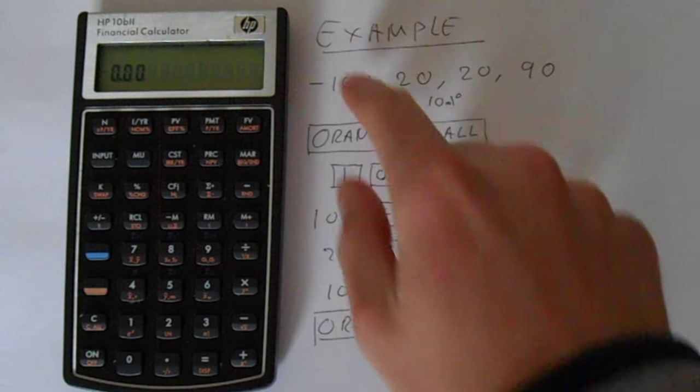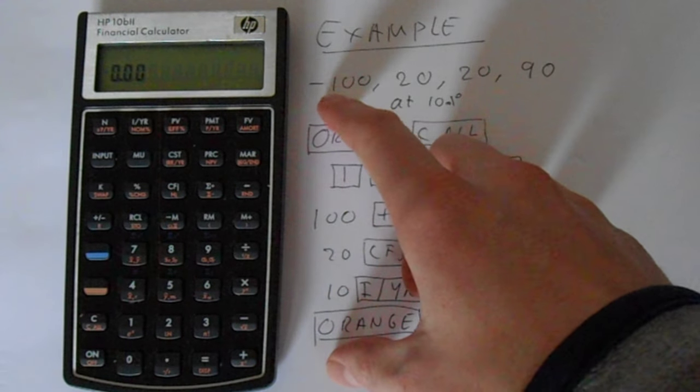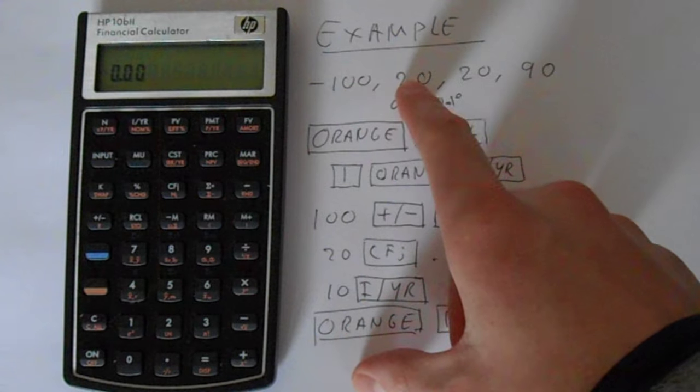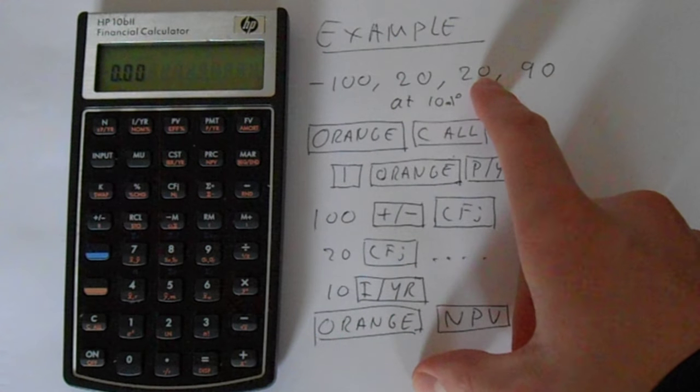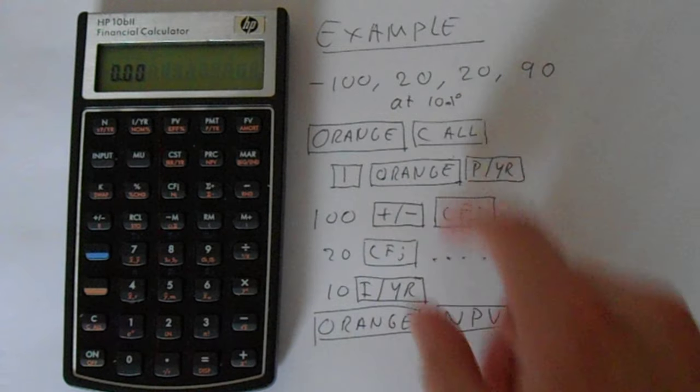For this example, we're going to take four cash flows and treat these as years. In our zero year, we're going to have a capital outlay of minus $100, then $20 in the first year, $20 in the second year, and $90 in the third year. We're going to use a 10% discount rate.